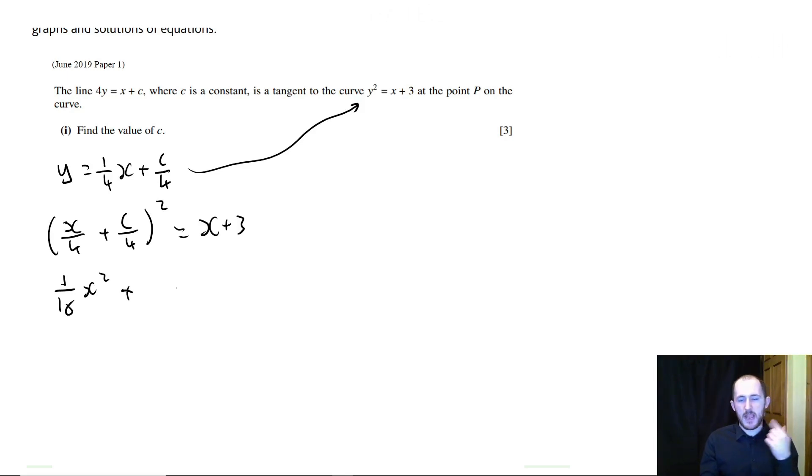So we have x squared. So let's call it 1 over 16 x squared. And then we're going to have xc over 16 plus xc over 16, which is going to be xc over 8. And then plus c squared over 16 equals x plus 3.